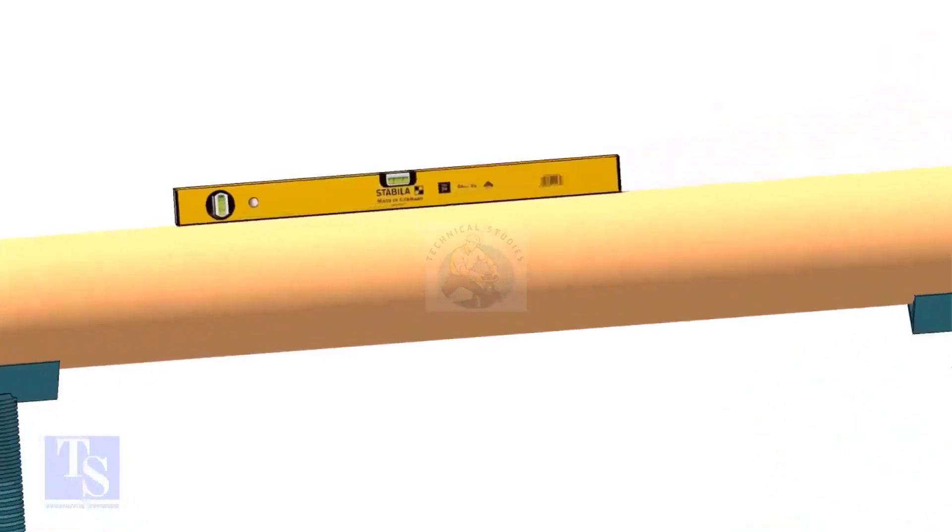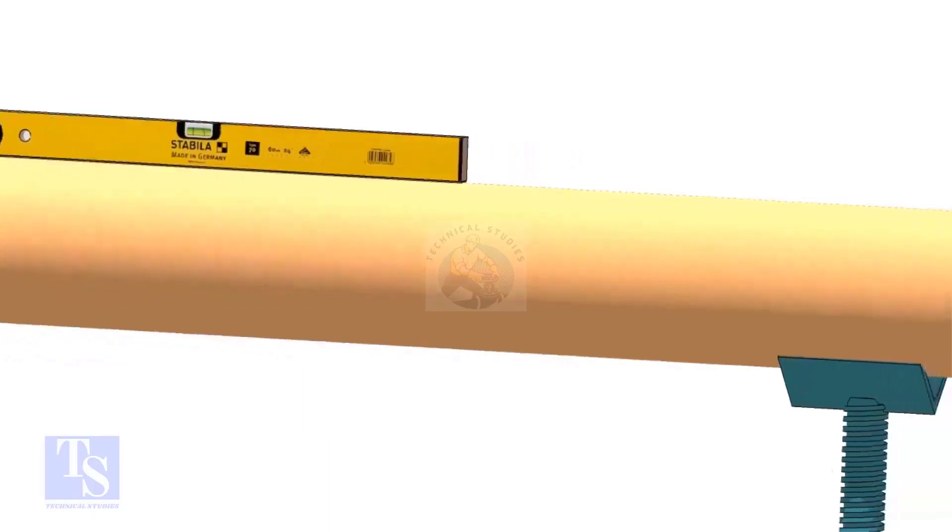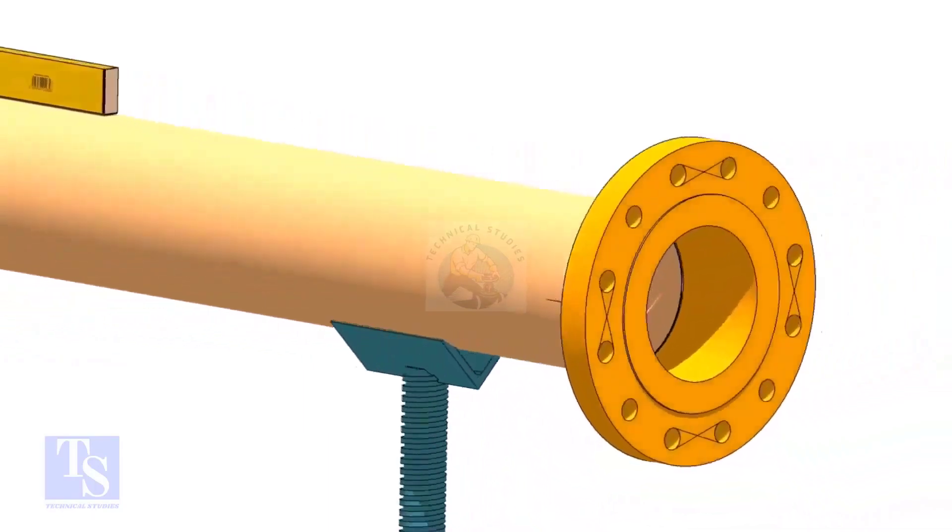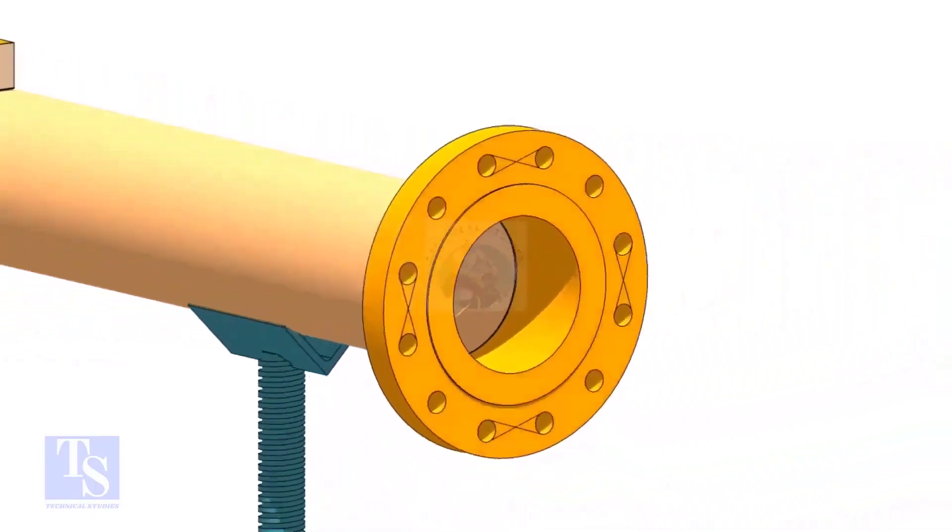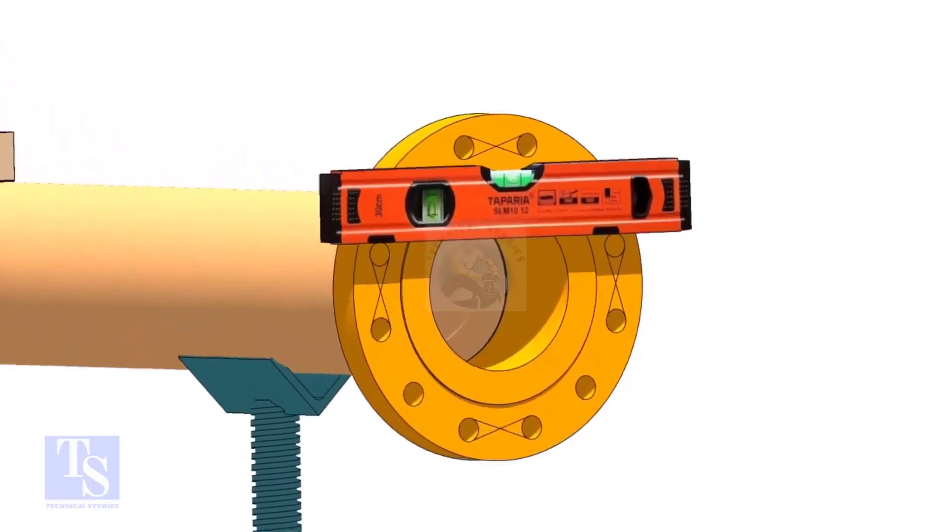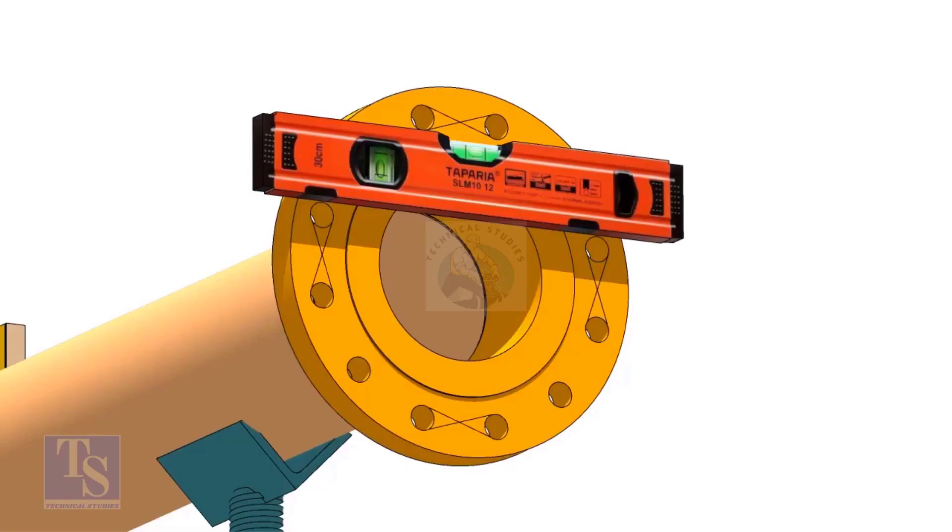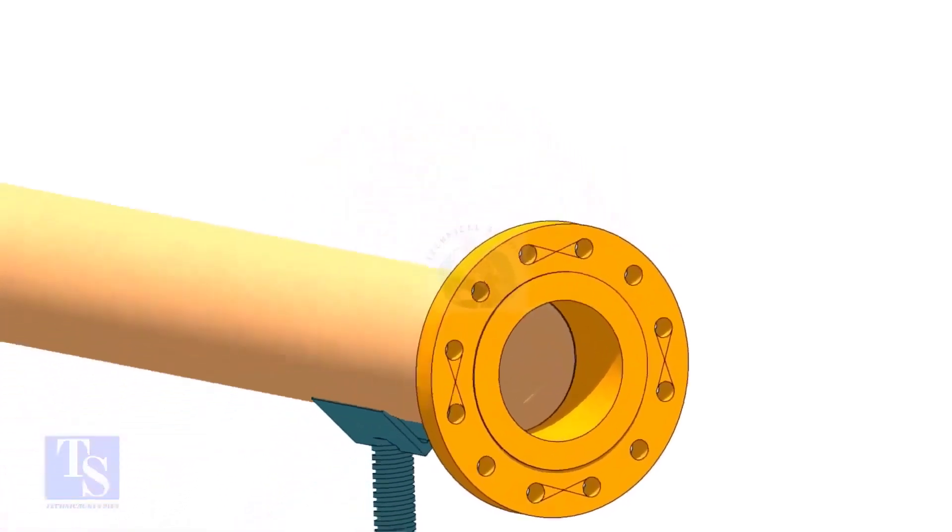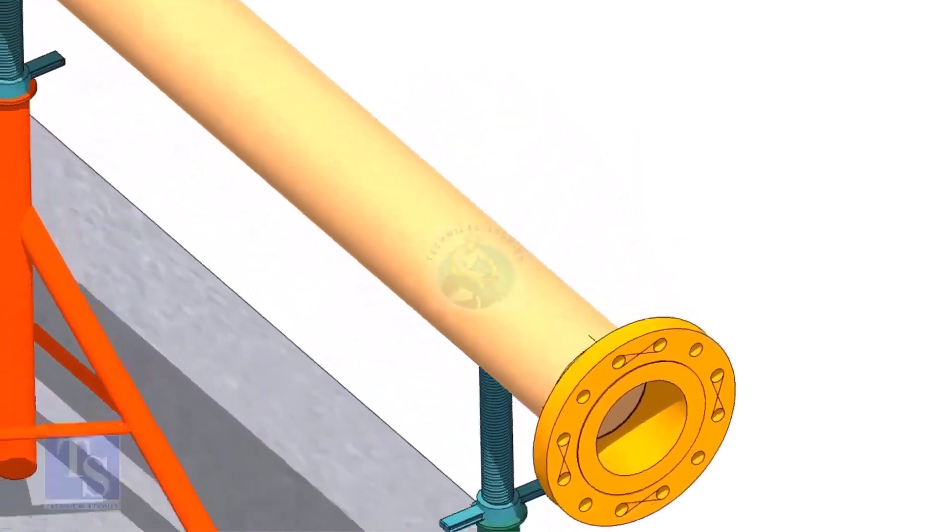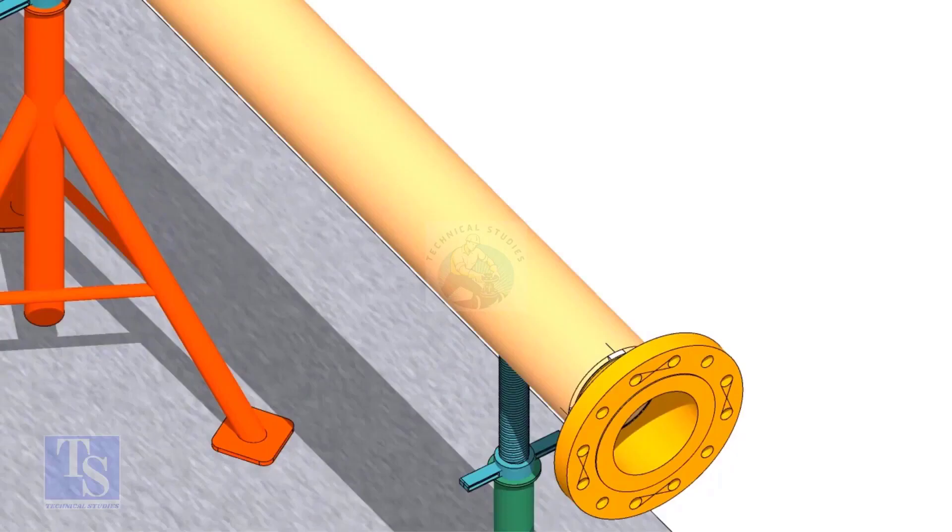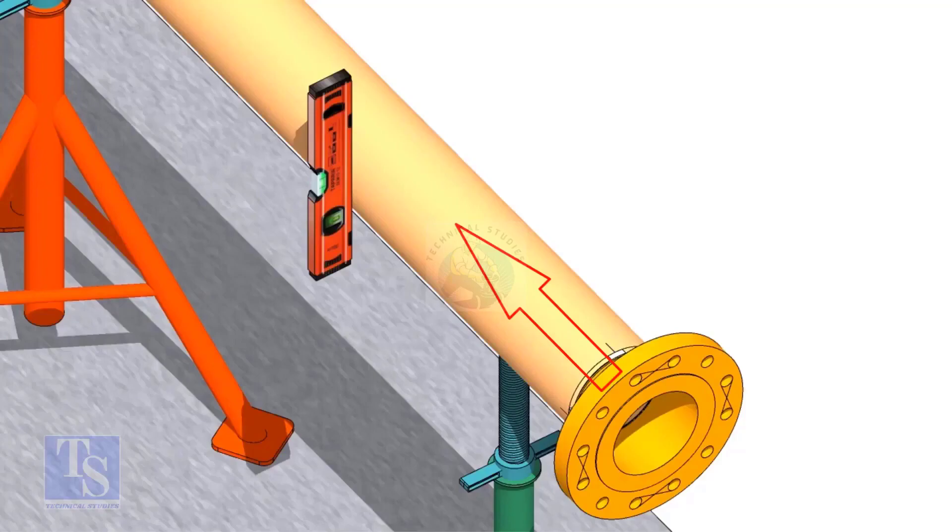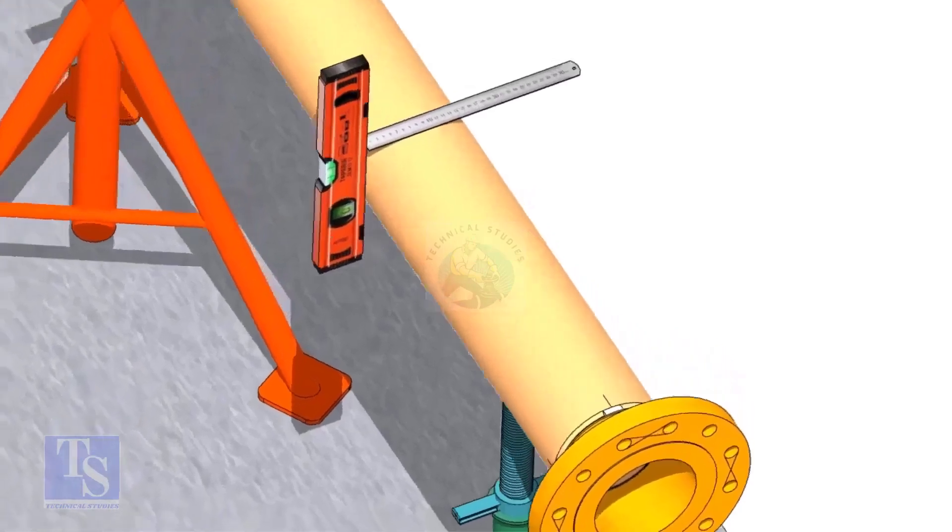Level the pipe and the face of the flange. Choose a point, roughly 595mm away from the flange face. Mark the center of the pipe.